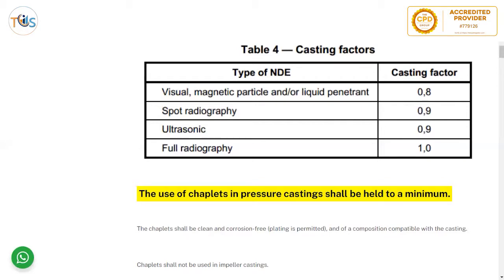If you perform only a visual, magnetic particle, or liquid penetrant inspection, you get a casting factor EC of 0.8, used for determining minimum thickness considering pressure. Spot radiography or ultrasonic testing gives EC of 0.9. Full radiography gives EC of 1.0, meaning the full casting factor can be utilized because you are certain no defect is present. The casting factor increases with the level of certainty of your examination.